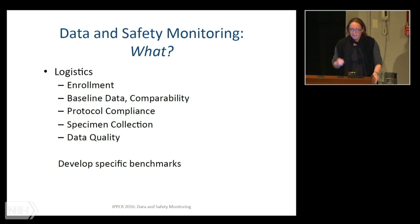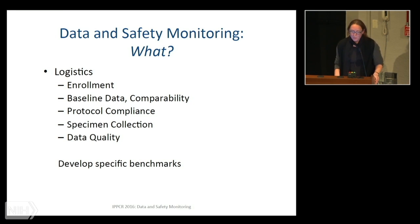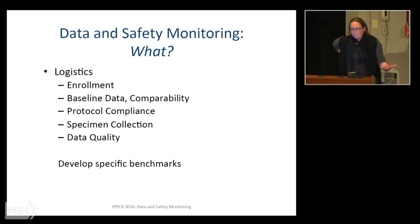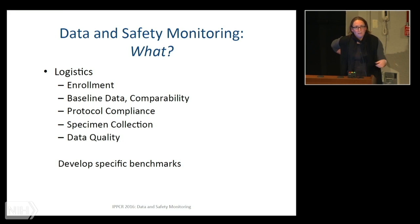A lot of times people have visit windows that are impossible — like everyone should come in plus or minus one day of their anniversary. When you wind up with 90% of your data in violation of the protocol, you rethink the protocol. Specimen collection — is it being accomplished? Are your data complete and is the quality good? Generally these databases are independently monitored, with a data monitor comparing source documentation with what's actually in the database, and those kinds of statistics would also potentially be reported to a DSMB.